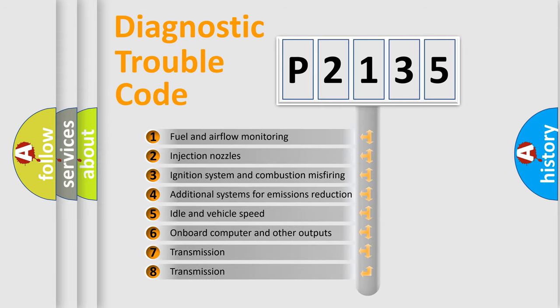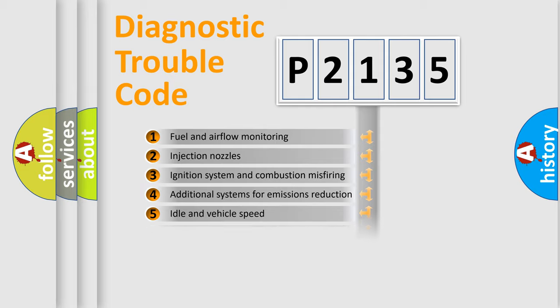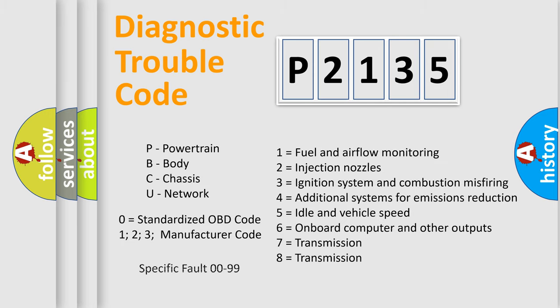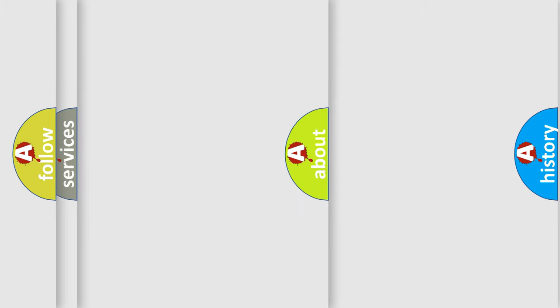The third character specifies a subset of errors. The distribution shown is valid only for the standardized DTC code. Only the last two characters define the specific fault of the group. Let's not forget that such a division is valid only if the second character code is expressed by the number zero.